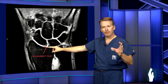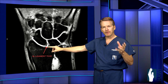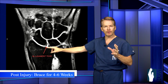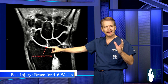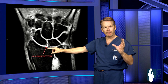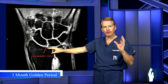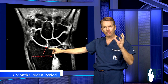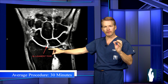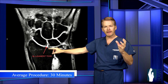Initially with a ligament tear of the wrist, conservative treatment would be about four to six weeks in a cast or brace, and sometimes that will heal. But after that period, there's about a three-month golden period where we aggressively treat these with minimally invasive arthroscopic surgery to go in and try to get these ligaments to heal.